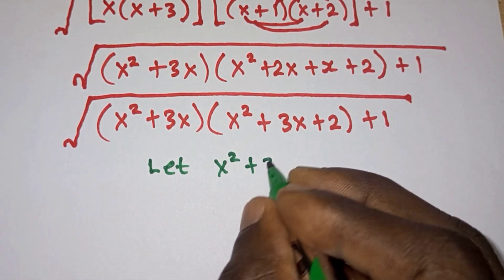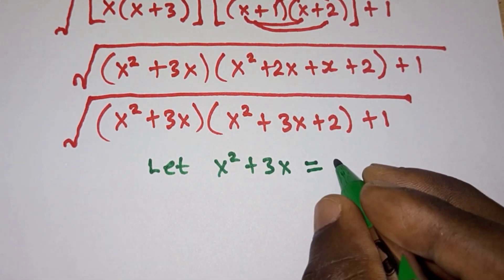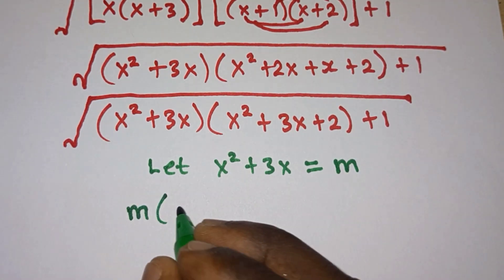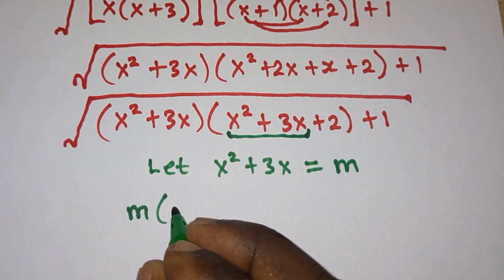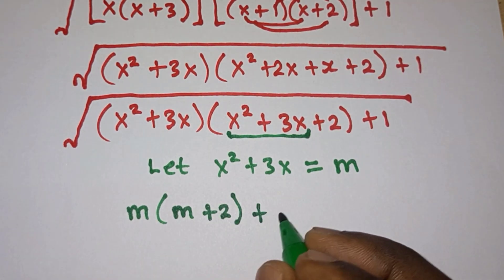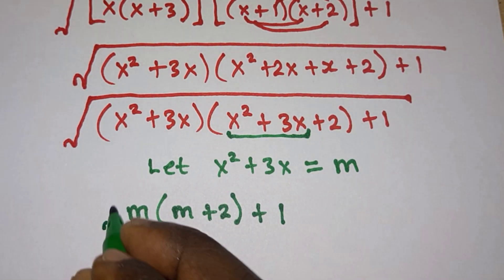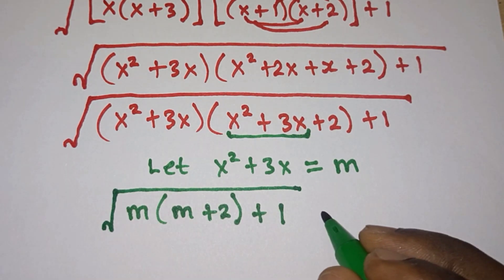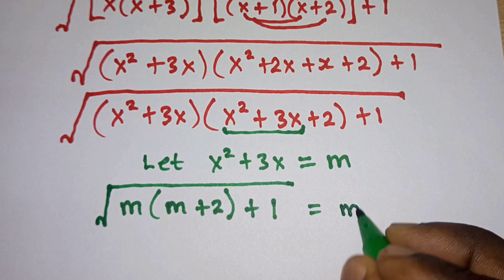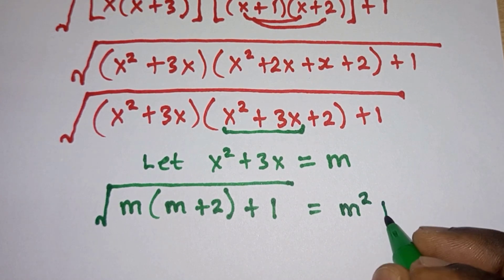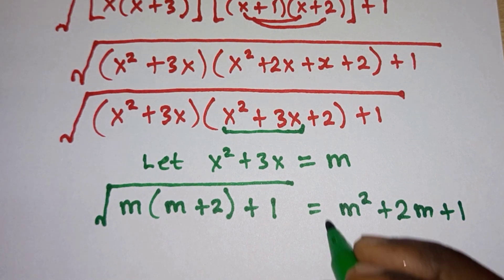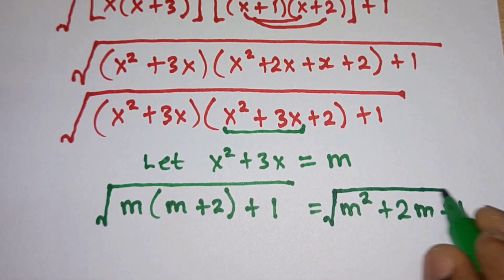Now let's go ahead and let x squared plus 3x equal to m. So the problem now becomes m times m plus 2, then plus 1.